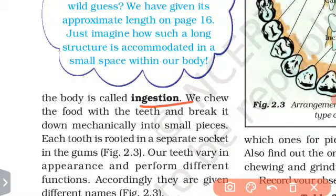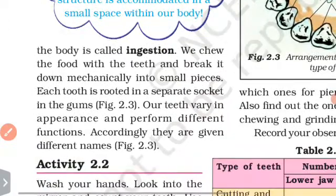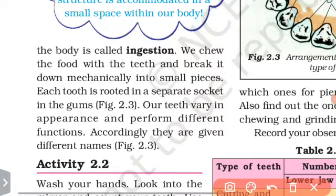We chew the food with the teeth and break it down mechanically into small pieces. Each tooth is rooted in a separate socket in the gum.